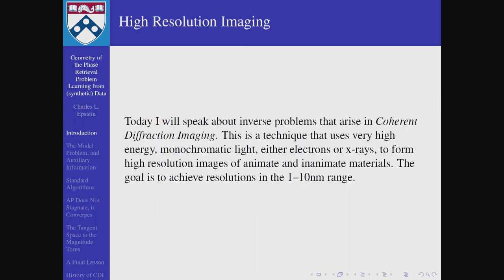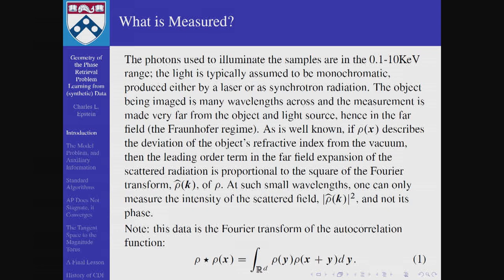I'm talking about an inverse problem that arises in the subject of coherent diffraction imaging. It's a technique that uses very high energy monochromatic light — either x-rays or electrons — and you try to make high resolution images of either living or not living things. The resolutions we're looking for are in the 1 to 10 nanometer range, so very very high resolution imaging. The photons used to illuminate the samples are in the 0.1 to 10 keV energy range, and we need really good quality monochromatic radiation.